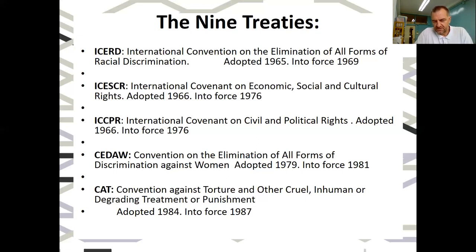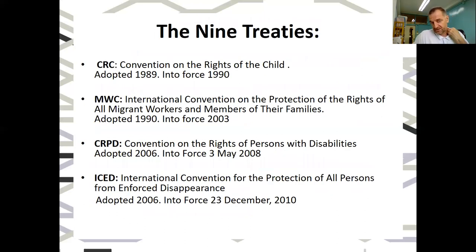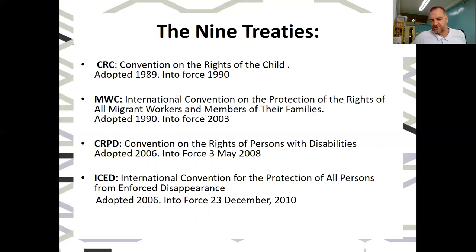Then we have women's rights treaties in the 1970s, the Convention Against Torture in the 1980s, and the CRC in the 1990s. Following CRC, there are three more treaties on migrant workers, disability, and forced disappearances. The most recent treaty came into force in 2010, meaning there hasn't been a new treaty adopted for at least 14 years — a very long gap — though there are some in the pipeline, including treaties on human rights defenders and potentially one on sexuality.